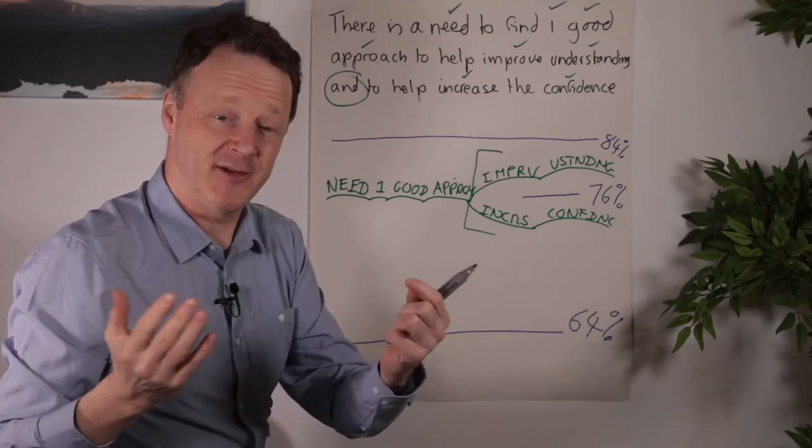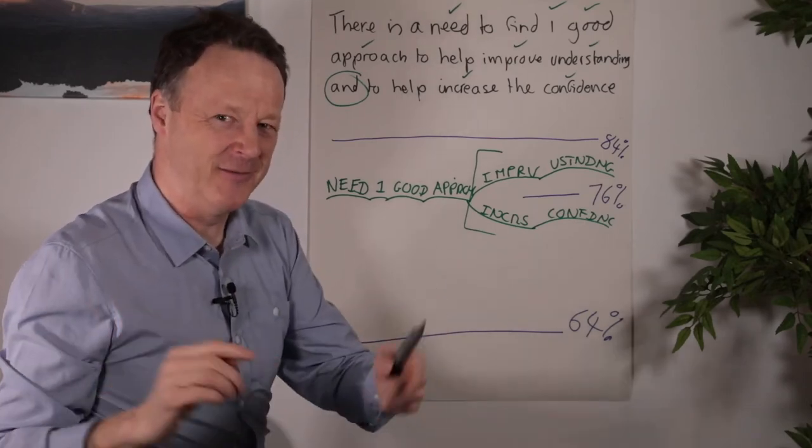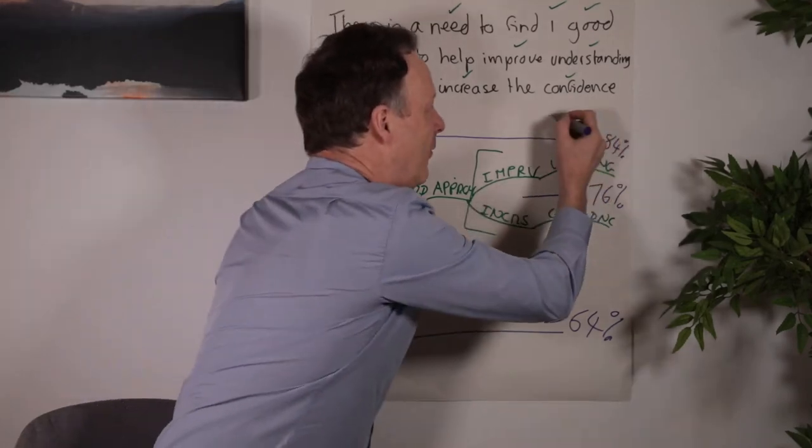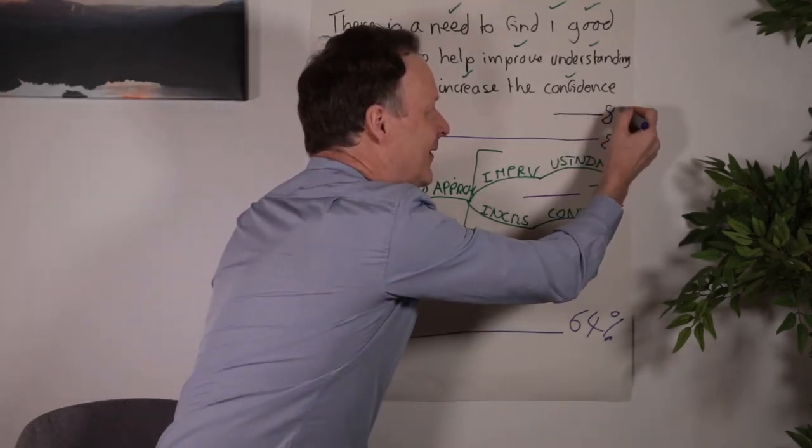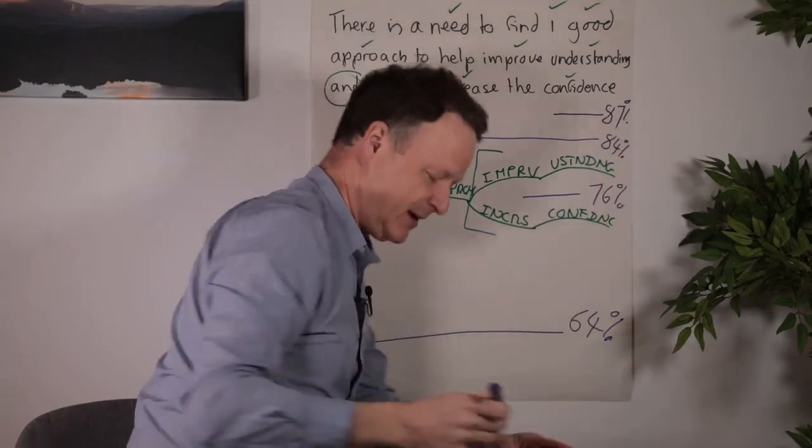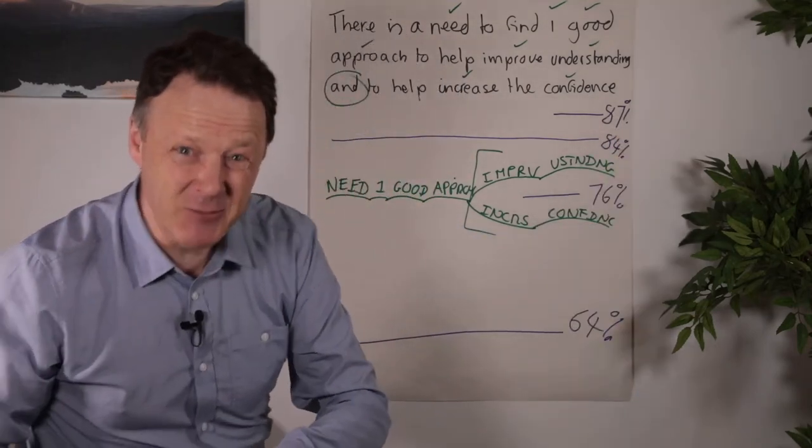But it gets even better still. Because for dyslexics, we can go even further. Real-time understanding for people with dyslexia goes up to 87%. I mean, that is a game changer.